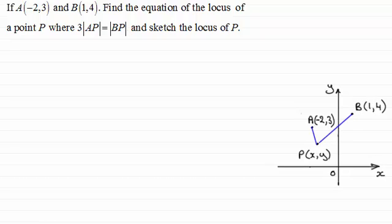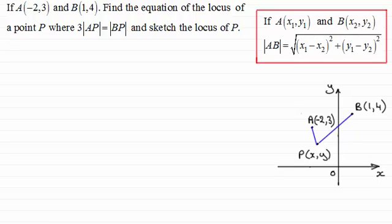Now we need to build up an equation based on this condition: 3|AP| = |BP|. We're looking at working with distances between points. You should be familiar with this formula for the distance between two points. Using this result, we have three times the distance AP.